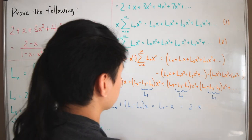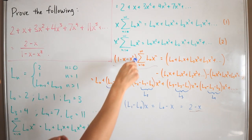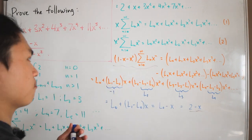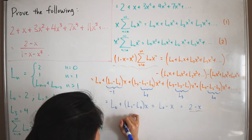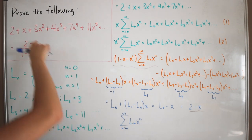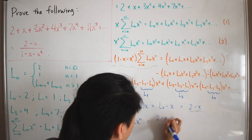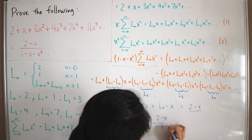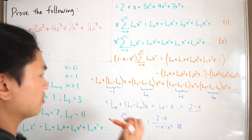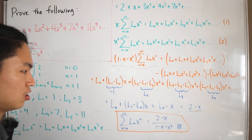So we have (1 minus x minus x squared) times G(x) = 2 minus x. Dividing both sides by (1 minus x minus x squared) gives us that the generating function equals (2 minus x) divided by (1 minus x minus x squared). Therefore the infinite sum from n equals 0 of L_n x^n, which expands to 2 plus x plus 3x squared plus 4x cubed and so on, is indeed equal to (2 minus x) divided by (1 minus x minus x squared). That completes the proof.